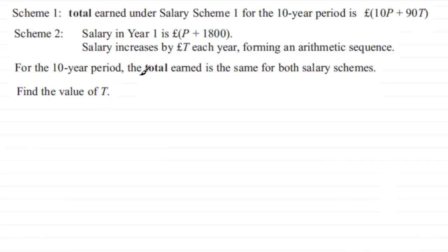We've already seen that in Scheme 1, the total earned was 10P plus 90T pounds. So to do this, we'll look at Scheme 2. Let's write this as a subtitle: Scheme 2. Now we'll look at the total for 10 years.